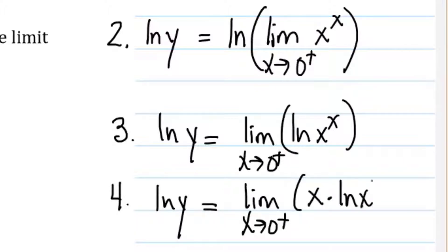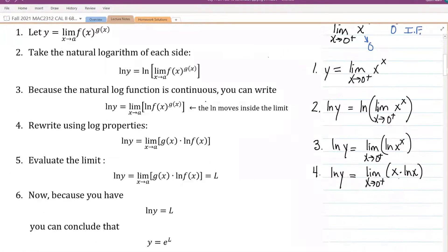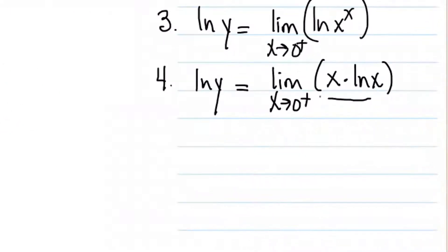x times the natural log of x. We now no longer have a zero to the zero power. We can reassess. So what would we get if we tried now to plug in zero? What kind of form would result? It'd be zero times...